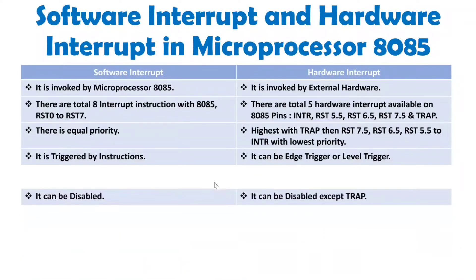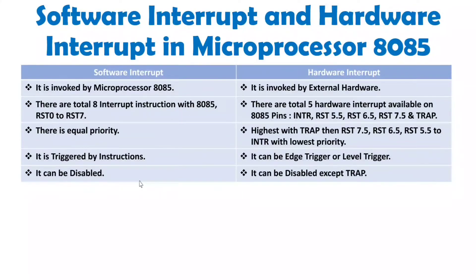For disabling of interrupts: all software interrupts can be disabled by the DI instruction, as well as other methods which will be discussed in the 8085 interrupt block diagram. For hardware interrupts, all interrupts other than TRAP can be disabled.